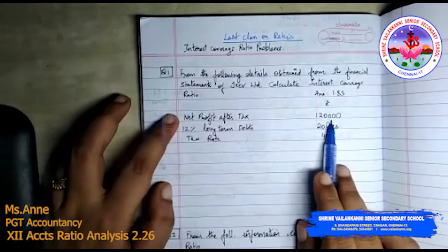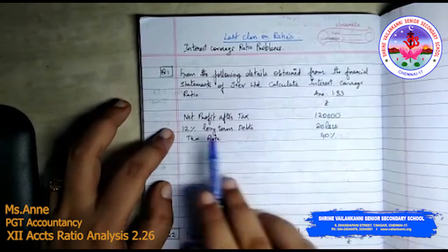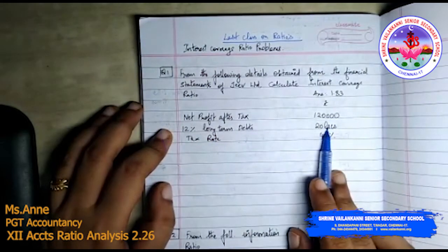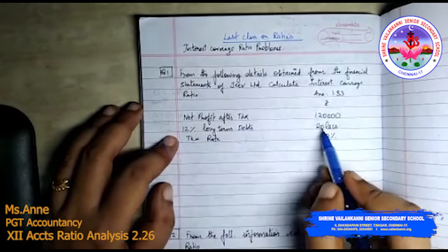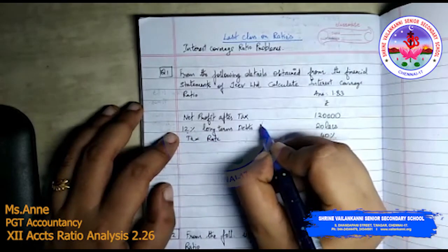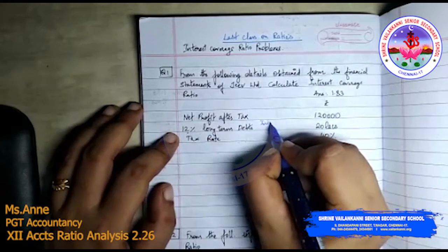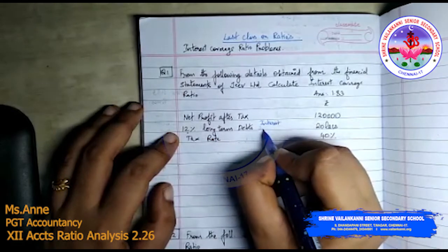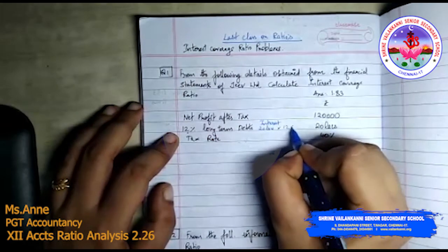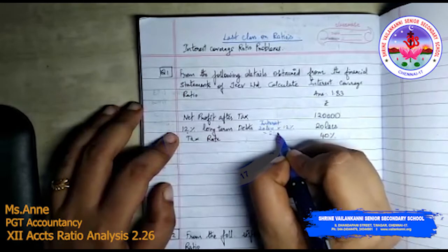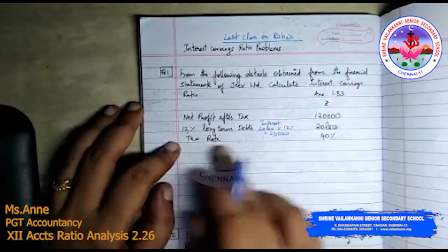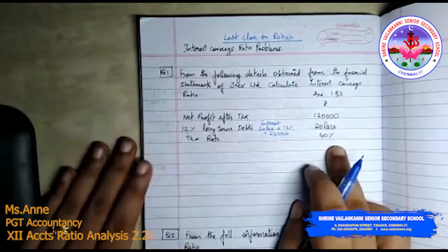Net profit after tax is 1 lakh 20,000. 12% long term debts is 20 lakhs, and 12% is the interest rate, so the interest is equal to 20 lakhs into 12%, that is 2 lakh 40,000. Tax rate is 40%.